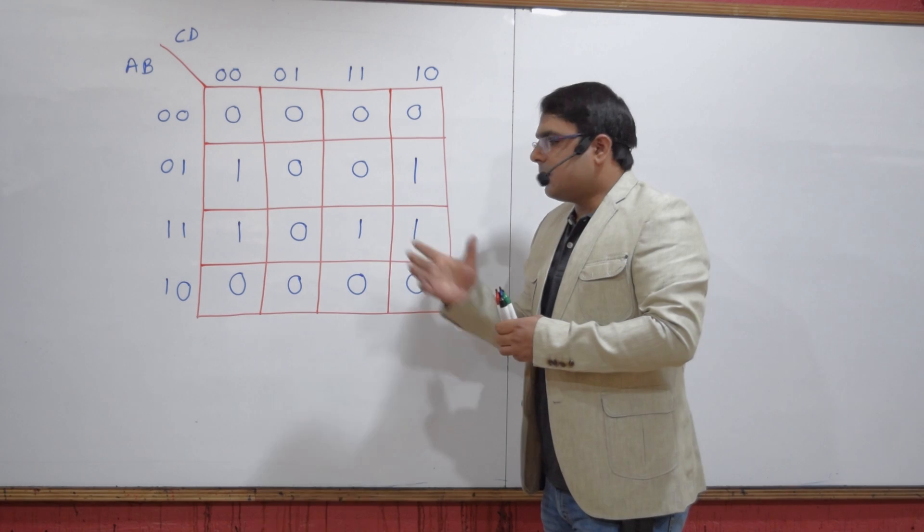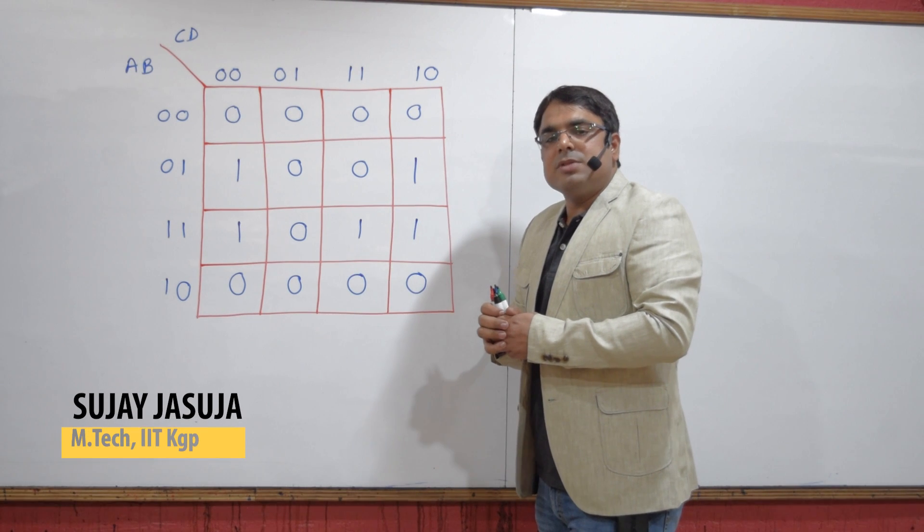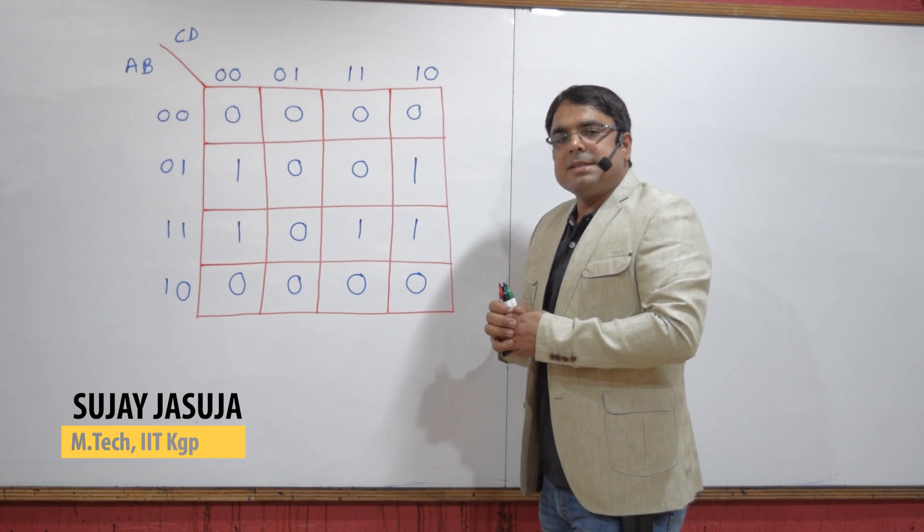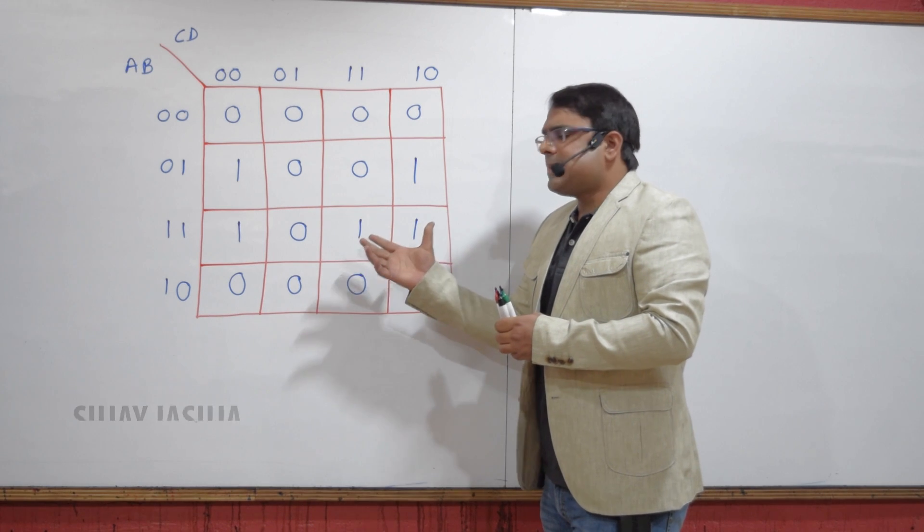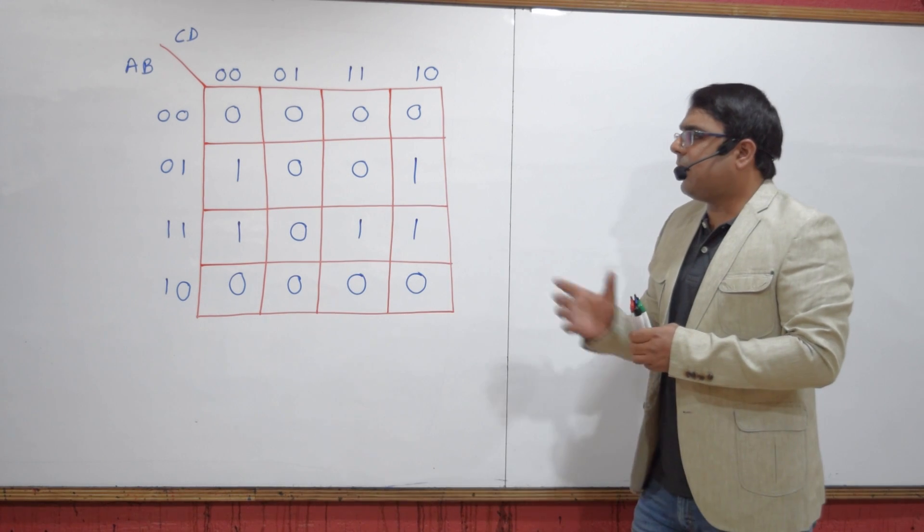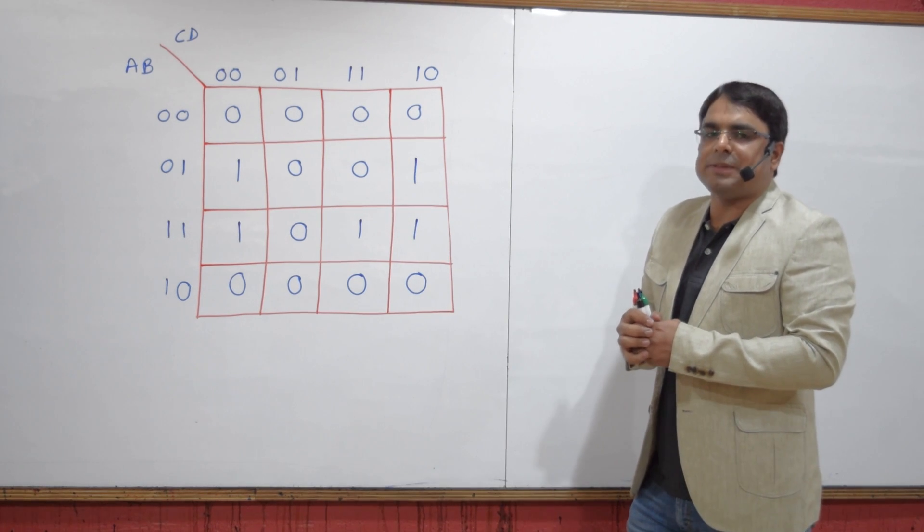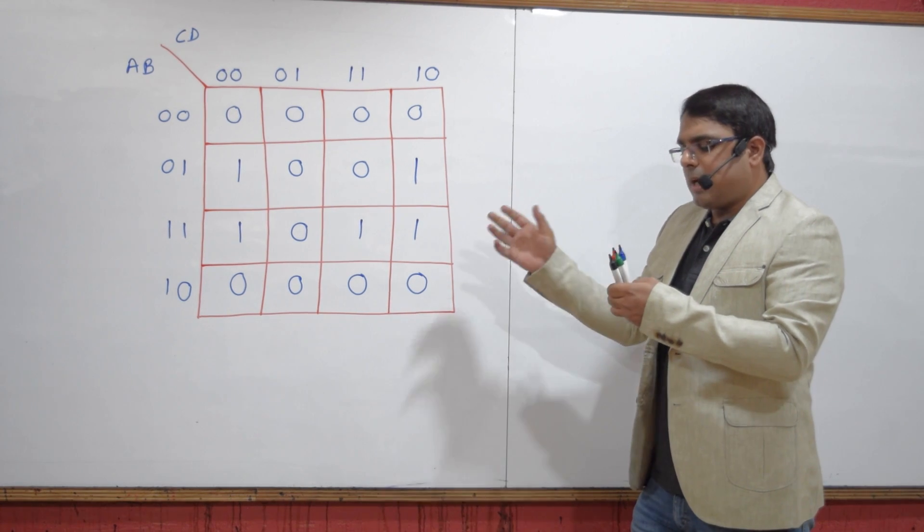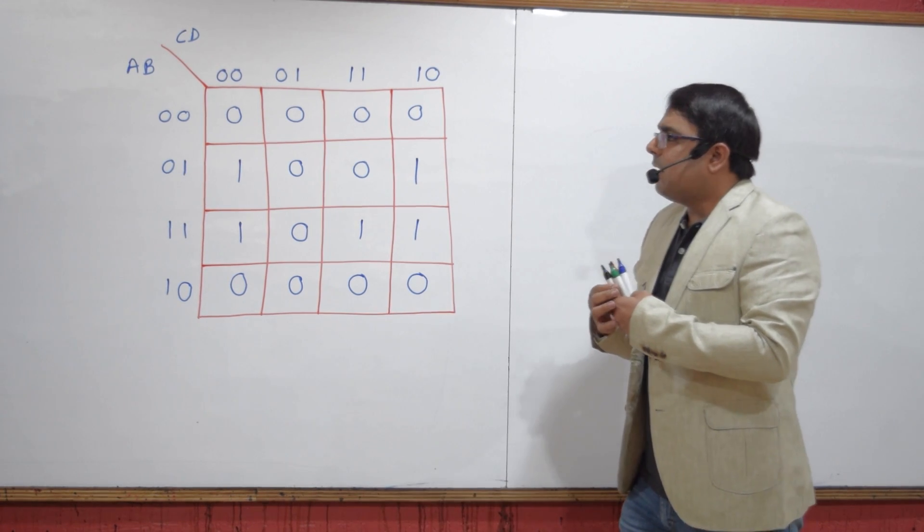Hello friends, this is a question from GATE 2017 Electrical Set 1. It's a very simple question based on minimization of boolean expressions. So you have a K-map. First of all,